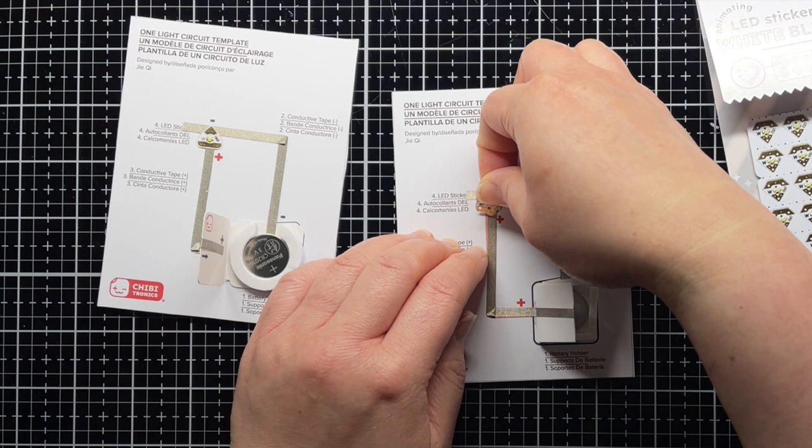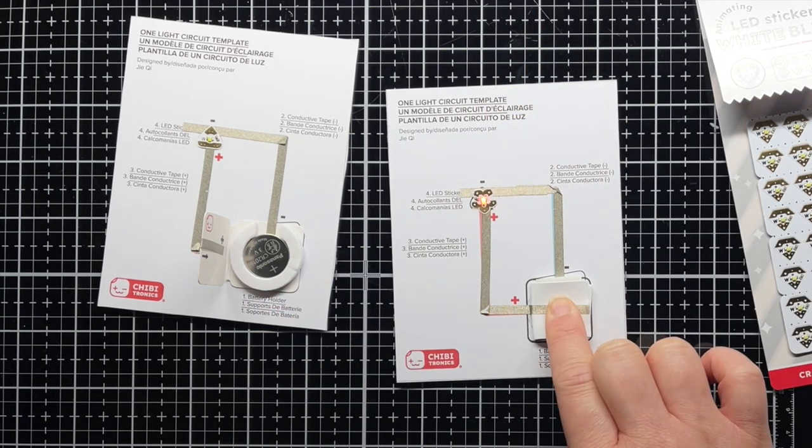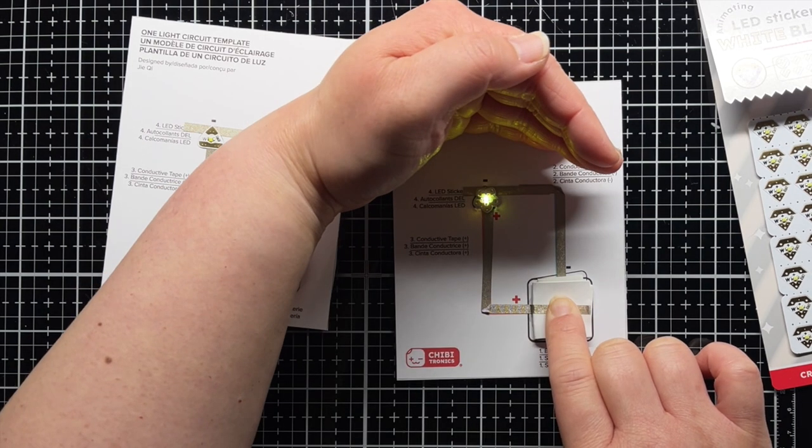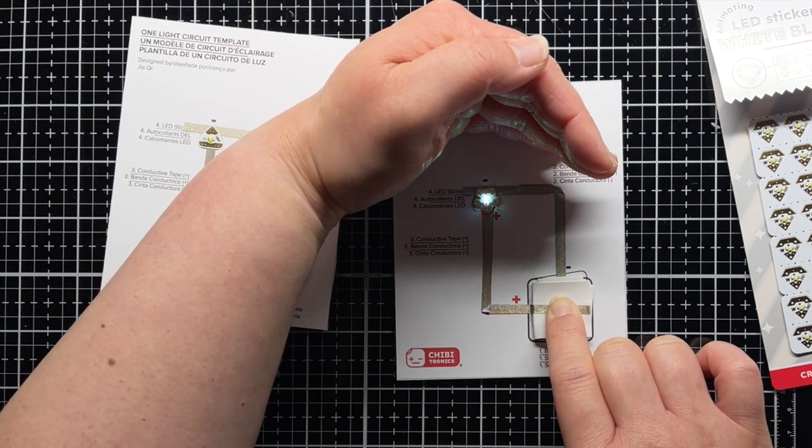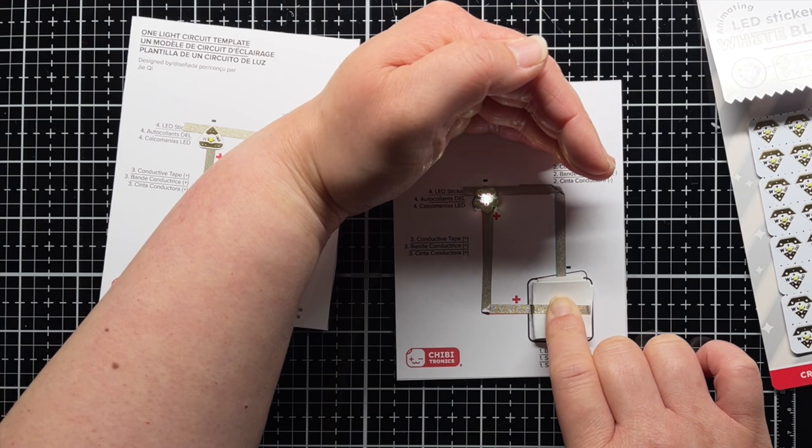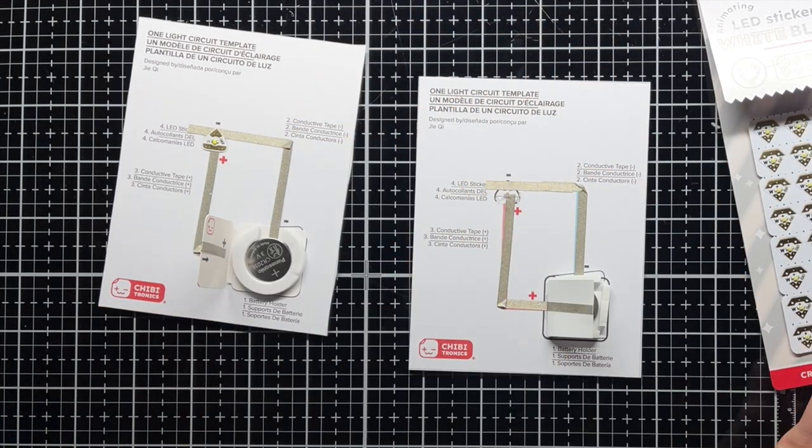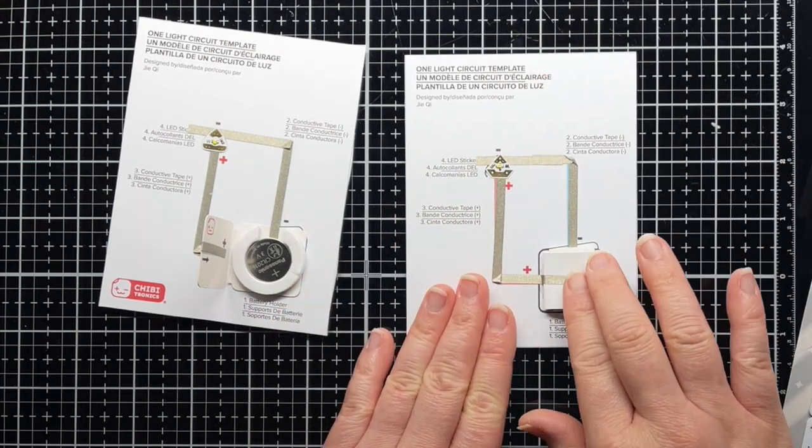Here you'll see that I can carefully peel up the sticker and exchange it for one of our animating LEDs. As long as the positive side of the sticker connects to the positive side of the battery, and the negative point of the sticker connects to the negative side of the battery, your LED sticker will light up. The positive side of our LED stickers is always the larger side, while the negative point is always the smallest.